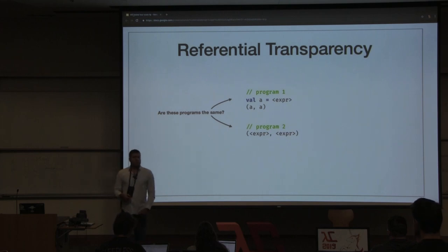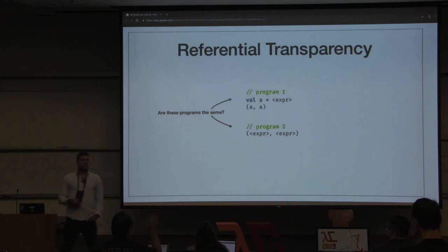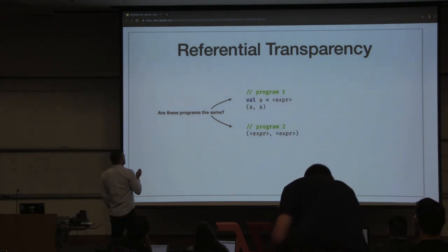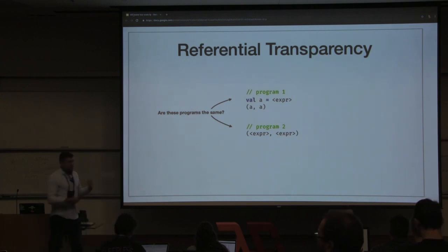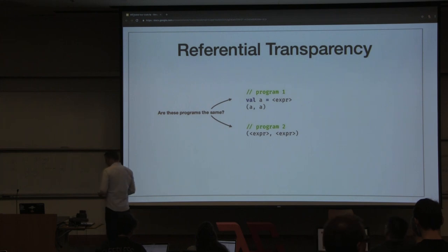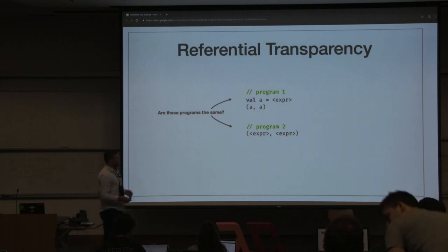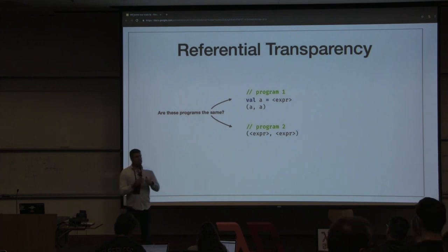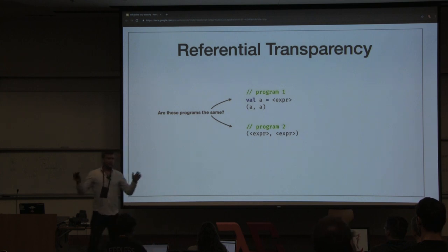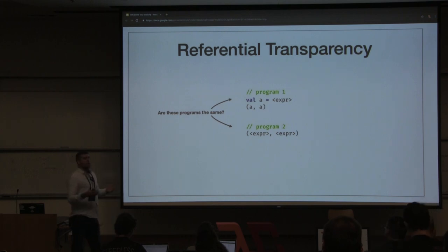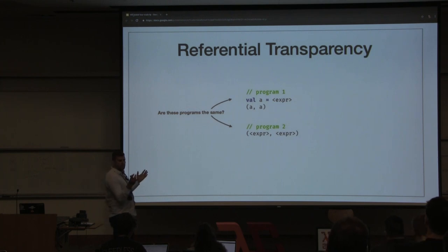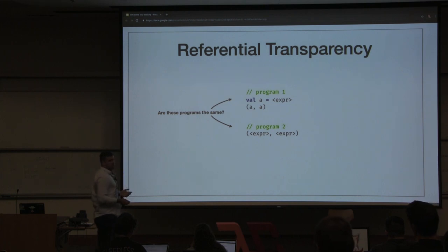Hands up who thinks they have a fairly good grasp on referential transparency. Referential transparency is at the core of what we try to do in pure functional programming. The reasons we want to do this type of programming: number one, it can help us eliminate entire classes of bugs from making it to production. And I also think it helps us push incidental complexity to the outside of our apps, which lets us see the inherent complexity of our business domain more clearly than when all the complexities are intermingled as in a typical imperative app.